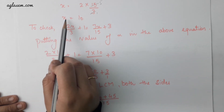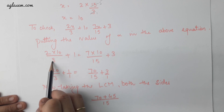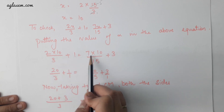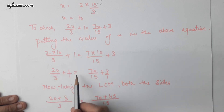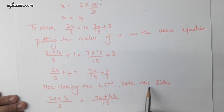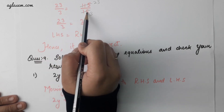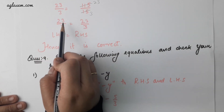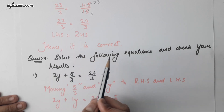To check, we will put the value of x in the given equation. We get 2 multiplied by 10 divided by 3 plus 1 equals to 7 multiplied by 10 divided by 15 plus 3. Taking LCM both sides gives 20 plus 3 divided by 3 equals to 70 plus 45 divided by 15, so 23 by 3 equals to 115 divided by 15, which is 23 by 3. Therefore, LHS is equal to RHS. Hence it is correct.